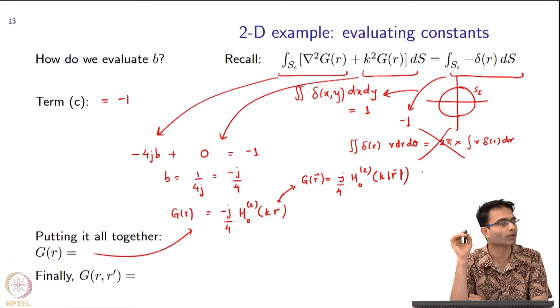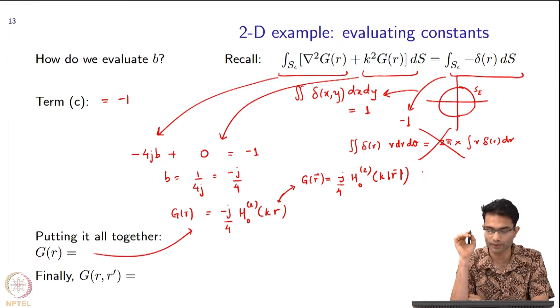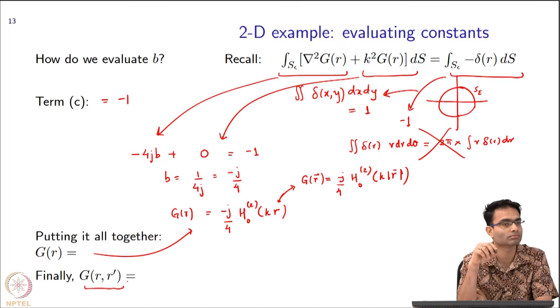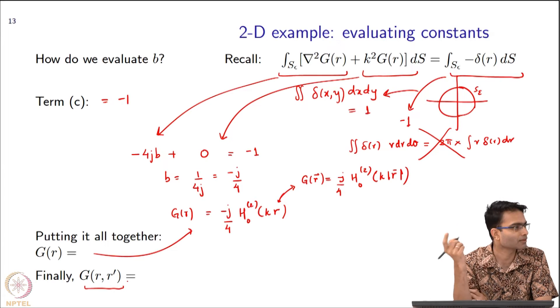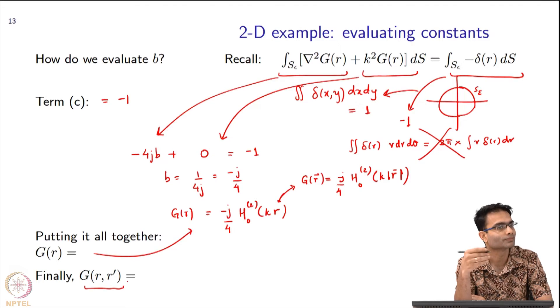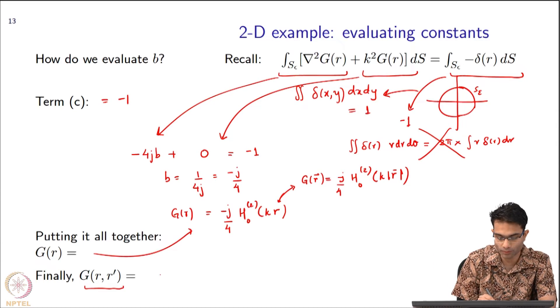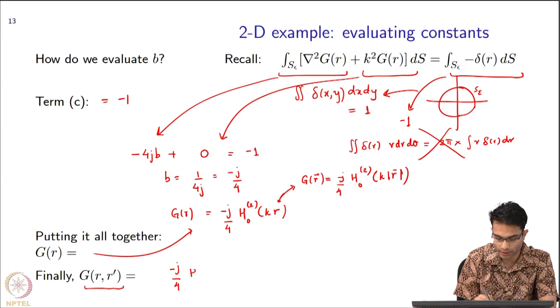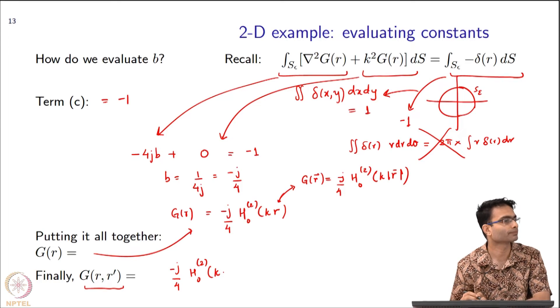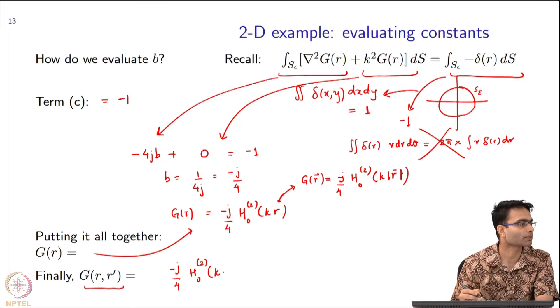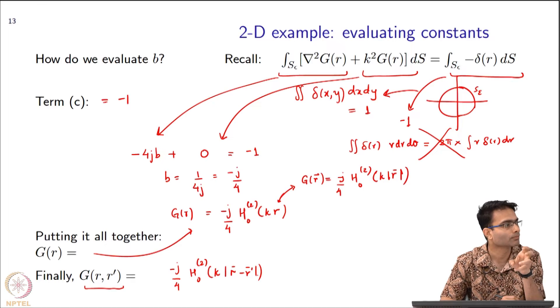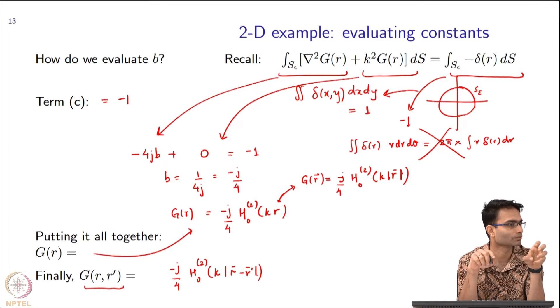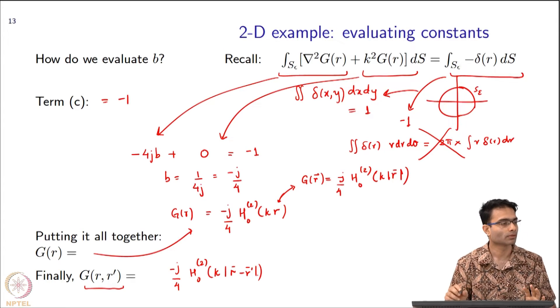What we had done to simplify all our math was that we put the delta function at the origin, and that's how we got this simple-looking differential equation. Now, let's make it general. Consider the case where I have my delta function at any location r⃗'. How will I get back my solution now? Once I have the solution, all I have to do is shift the origin. What will be the final form I should write? -j/4 H₀⁽²⁾(k|r⃗-r⃗'|), because this is implicitly making r⃗' the origin and finding out the distance of r⃗ from r⃗'.